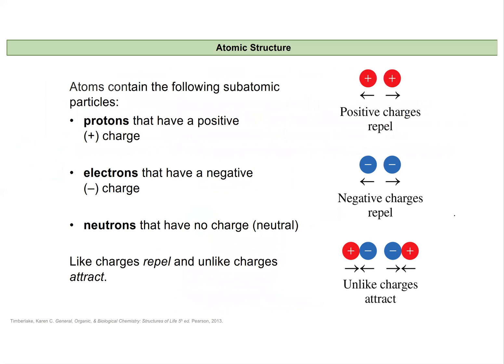Atoms contain subatomic particles. Inside the nucleus we have protons that have a positive charge and neutrons that have no charge at all. Around the nucleus we have electrons that carry a negative charge. A great deal of chemistry is founded on the simple principle that like charges repel and unlike charges are attracted to each other — similar to magnets, or the idea that opposites attract. Two protons coming close together will repel; two electrons will also repel; but an electron and a proton, being opposite charges, will be attracted to one another.